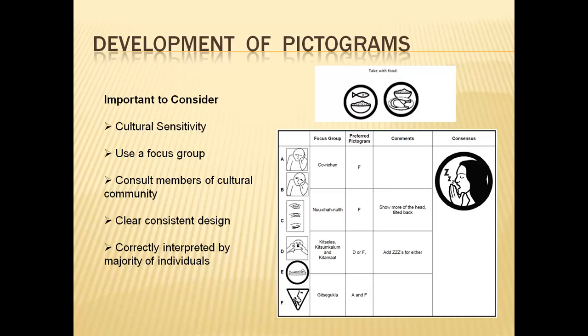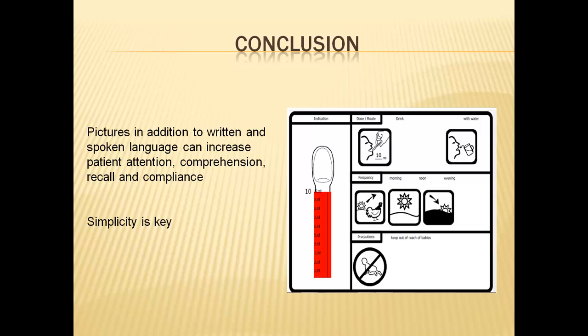In conclusion, pictures in addition to written and spoken language can increase patient attention, comprehension, recall, and compliance. In many cases, these benefits are large. The effectiveness of health communications can be significantly increased by including pictures in the design of new health education materials. The simplicity of pictograms is also a key factor to their success. Realistic photographs may be effective in drawing attention, but because the camera captures so many details, those details may interfere with comprehension. Effective use of pictograms builds on a foundation of clear language — pictograms will be more easily understood when the accompanying text is clear. Captions that describe what is happening in a pictogram can often be written at a low literacy level, thereby helping people with limited reading skills understand the intended meaning.